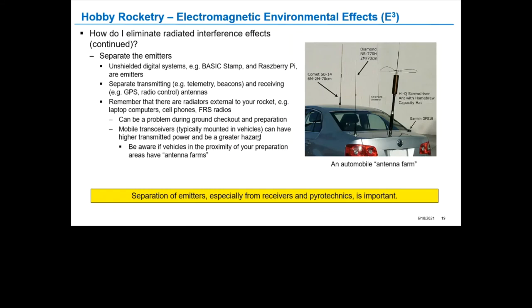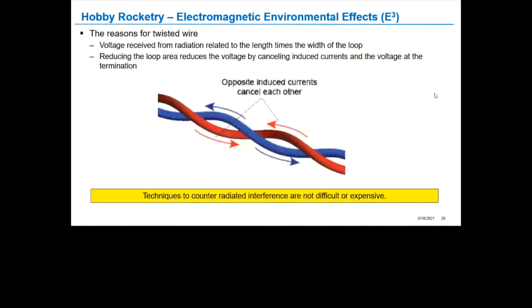The reasons for twisted pairs: the voltage that is received is the length times the width of the loop. What you're trying to do is minimize the loop area and you have canceling induced currents and voltage.